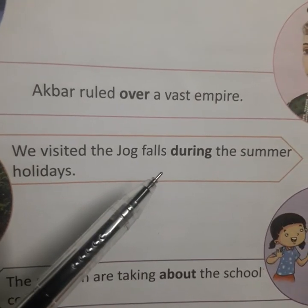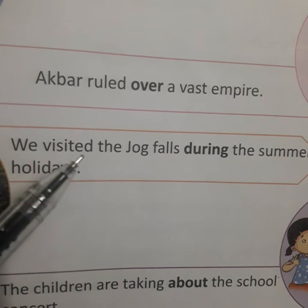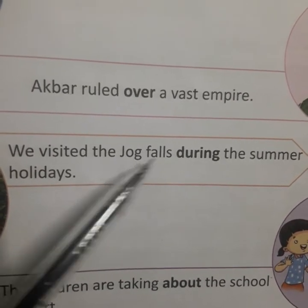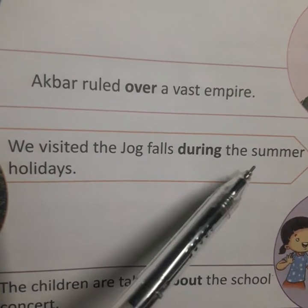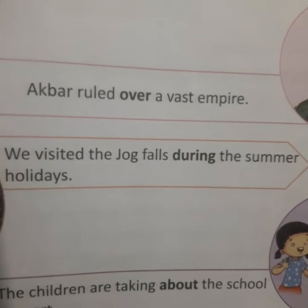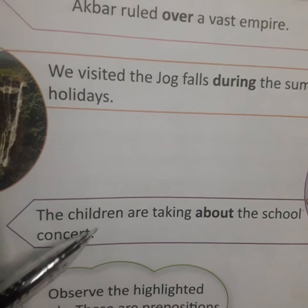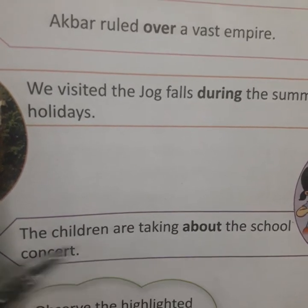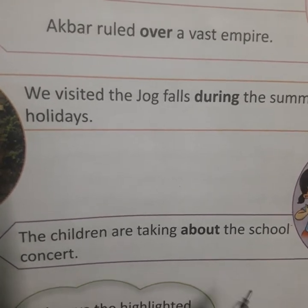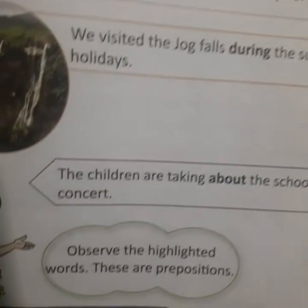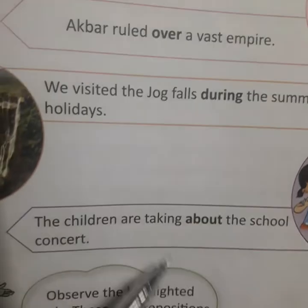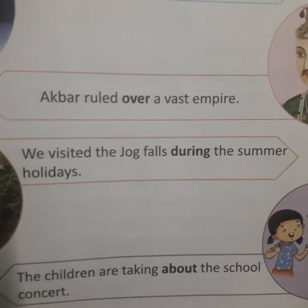We visited the Jog Falls during the summer holidays. हमने Jog Falls visit किया, कब किया? During the summer holidays. So, it is connecting — Jog Falls is being connected with the summer holidays by the word 'during'. So, 'during' is here a preposition. The children are talking about the school concert. बच्चे बात कर रहे हैं school concert के बारे में. जो word 'about' है, ये children को school concert के साथ connect करता है. Observe the highlighted words — these are prepositions. यहाँ पे जितने भी highlighted words हैं, ये सब prepositions हैं.